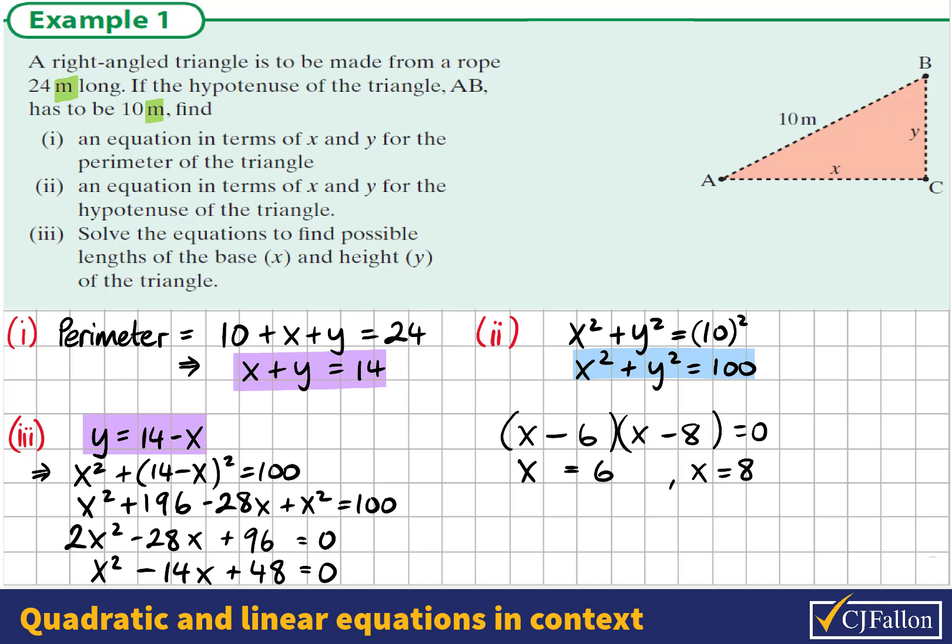And if these are our x values, what would our y values be? Well, remember y equals 14 minus x. So 14 minus 6 would be 8, and 14 minus 8 would be 6. Now, this is not surprising. x and y are interchangeable. One of them is 6 and the other one is 8 meters.